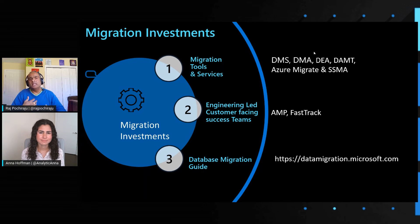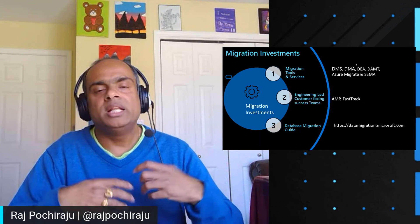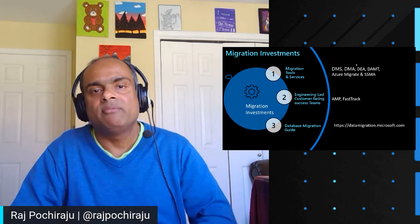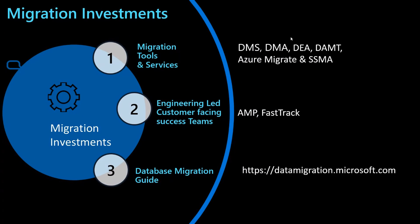We also invest heavily in engineering programs because we know some migrations are complex — it's not just a tools problem. You need guidance on cloud adoption, policies, and planning. We have programs like AMP — the Azure Migrate Program — and FastTrack, where we provide white-glove engineering experience for complex migrations at zero cost to you. Through those programs and tools, we gather learnings and document migration best practices into the database migration guide, available at datamigration.microsoft.com, which provides step-by-step guidance for your migration journey.